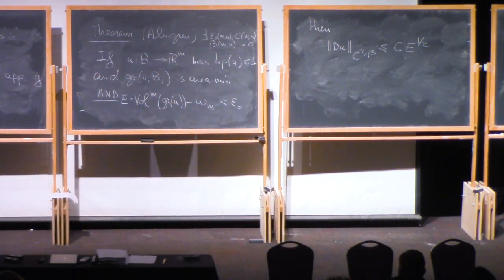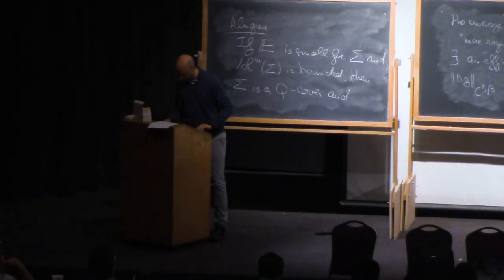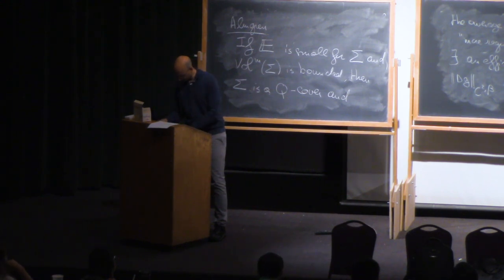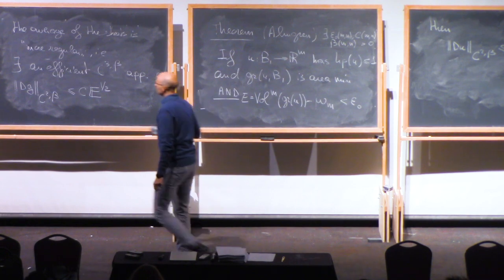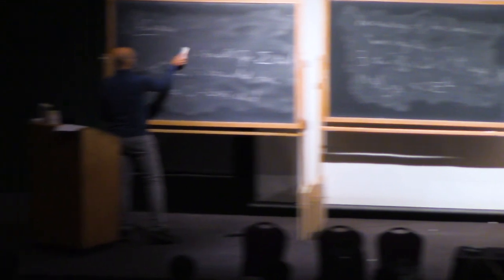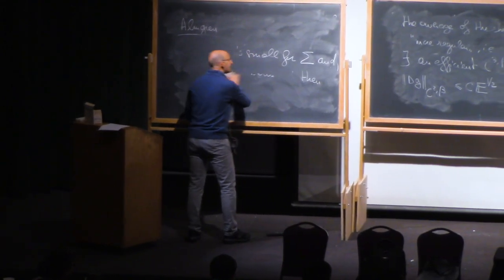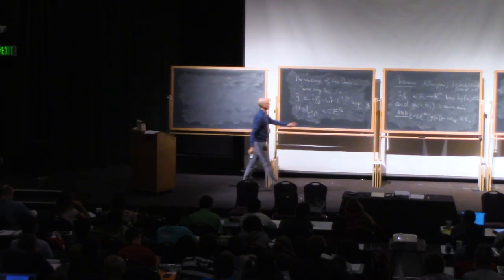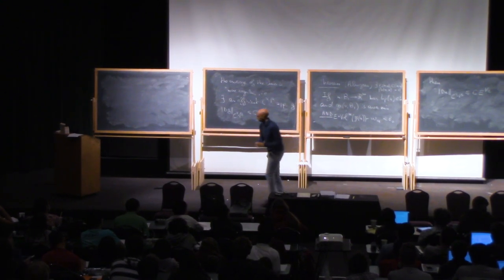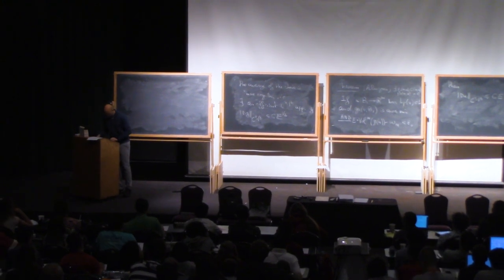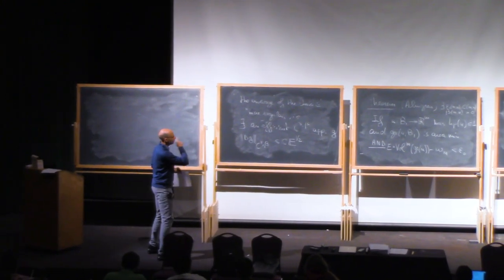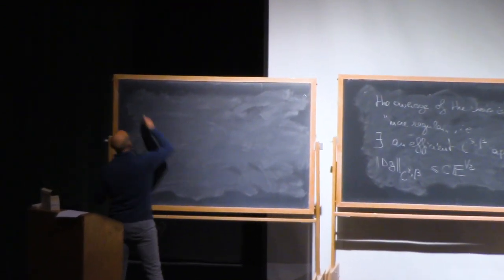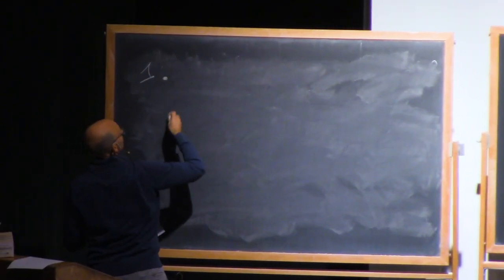The plan of the lectures is to give first a proof of De Giorgi's theorem and then a proof of Almgren's theorem as defined. Hopefully by the end of the second lecture tomorrow, or not too deeply into the third lecture, we will be finished with De Giorgi's theorem, and then the conclusions of De Giorgi's theorem will be used to prove Almgren's theorem.